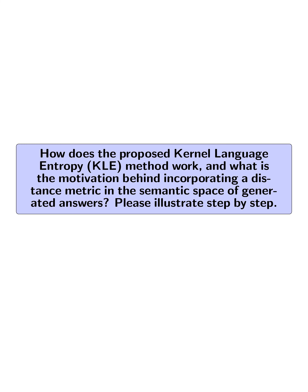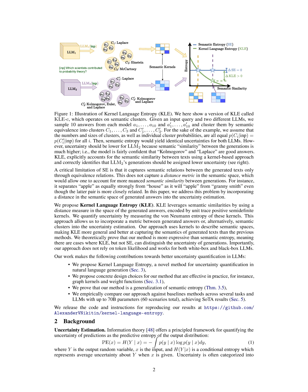How does the proposed Kernel Language Entropy (KLE) method work, and what is the motivation behind incorporating a distance metric in the semantic space of generated answers? KLE works by incorporating a distance metric in the semantic space of generated answers to better quantify semantic uncertainty. The motivation is to address the limitation of semantic entropy (SE), which only captures semantic relations through equivalence relations, not accounting for nuanced semantic similarity between generations.